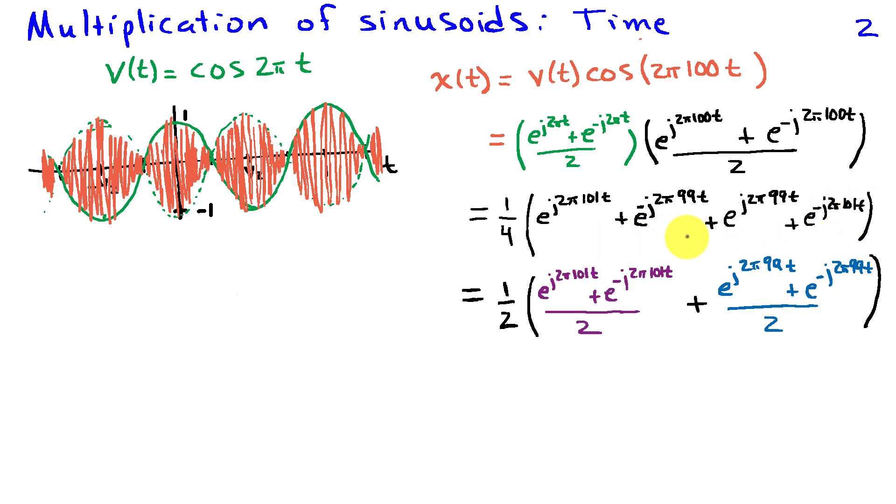Now I'm going to group these terms in a convenient way. I'm going to group the terms with frequency 101 hertz. So I have e to the j 2 pi 101 t, e to the minus j 2 pi 101 t over 2. And I'll group another term involving the frequencies positive 99 hertz and negative 99 hertz.